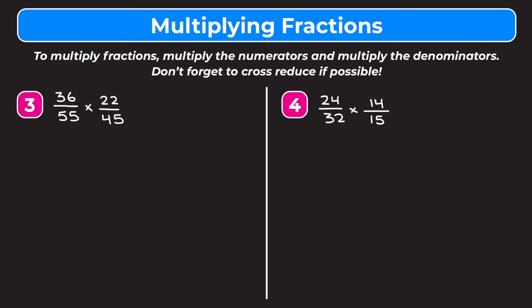We want to break up all parts of our fractions into factors. I'll break 36 into 9 and 4, and 55 into 5 and 11, then 22 into 2 times 11, and 45 into 9 times 5. The reason I chose these factors: 36 and 45 both have a 9 in common, and 55 and 22 both have 11 as a common factor.